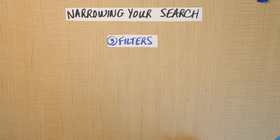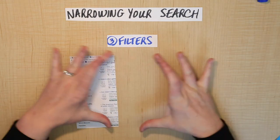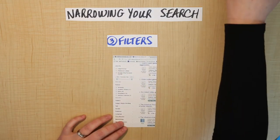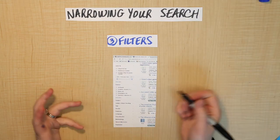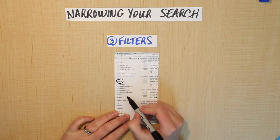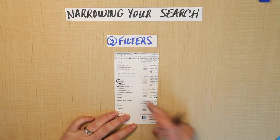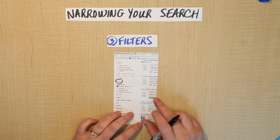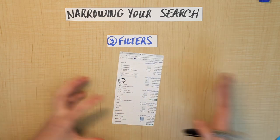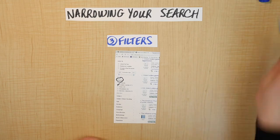The third technique is using filters — the section on the side of your screen with checkboxes you can select. When you have your search results, one of your options is to filter by format: academic journals, books, electronic collections. You can click the academic journals box to make your results more relevant, since you need peer-reviewed academic journal articles. Each of these techniques helps you get more and more specific and relevant. Let's take a look at how this actually works in the database.